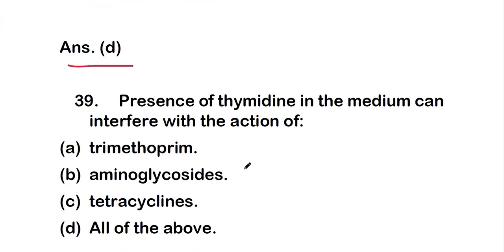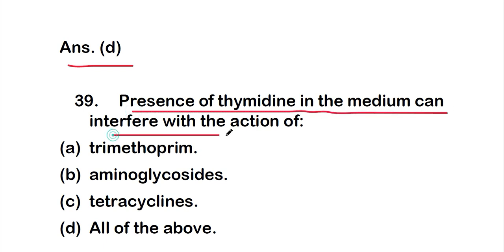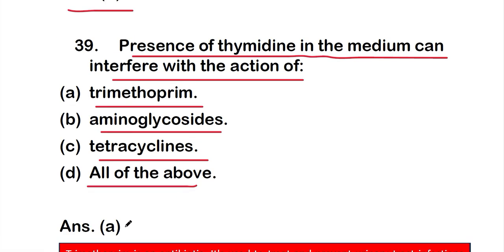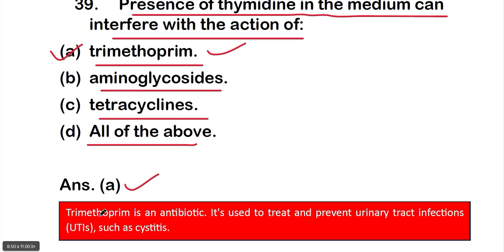Question 39: Presence of thymidine in the medium can interfere with the action of — option A: trimethoprim, option B: aminoglycosides, option C: tetracycline, or option D: all of them. The right answer is option A, trimethoprim. Trimethoprim is an antibiotic used to treat and prevent urinary tract infections such as cystitis.